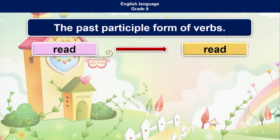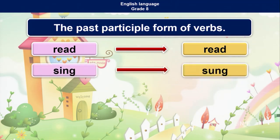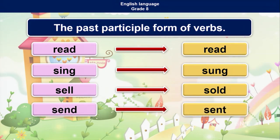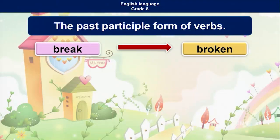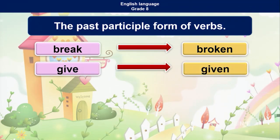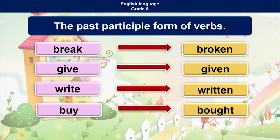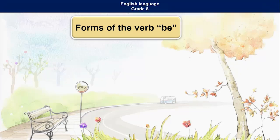In irregular verbs a new word comes. Read — read. Remember children, the same spellings but different pronunciation when it comes to the past participle form — read becomes 'red'. Sing — sung, sell — sold, send — sent, break — broken, give — given, write — written, buy — bought. Those past participle forms should be remembered by you. You have to learn them by heart.